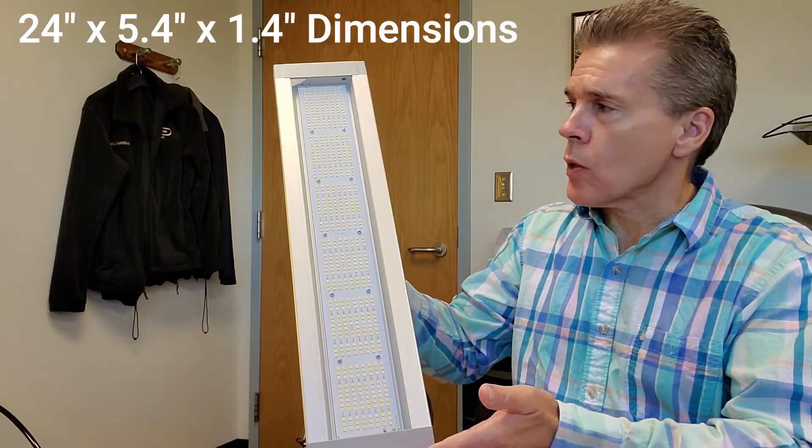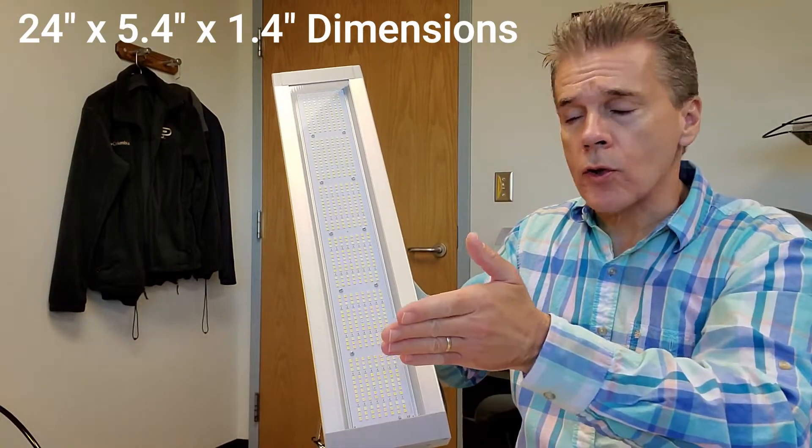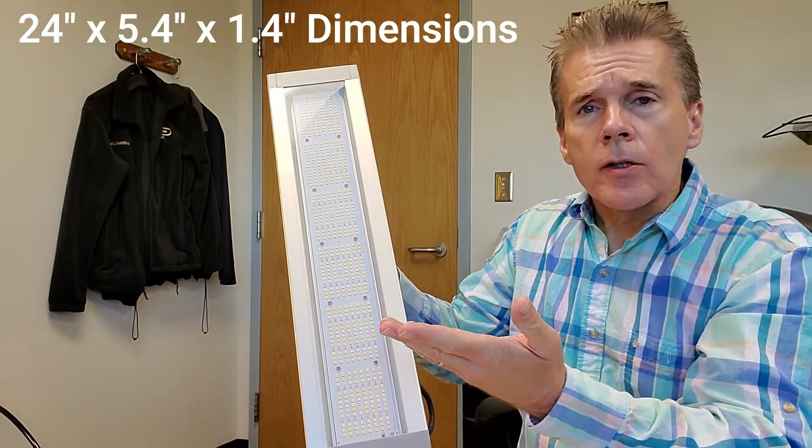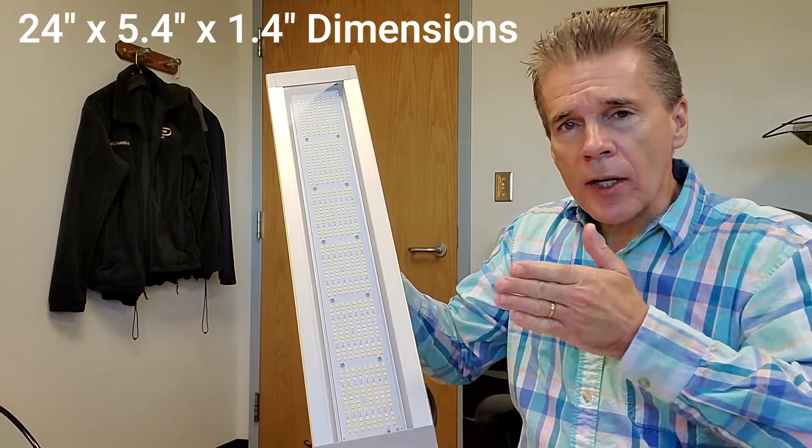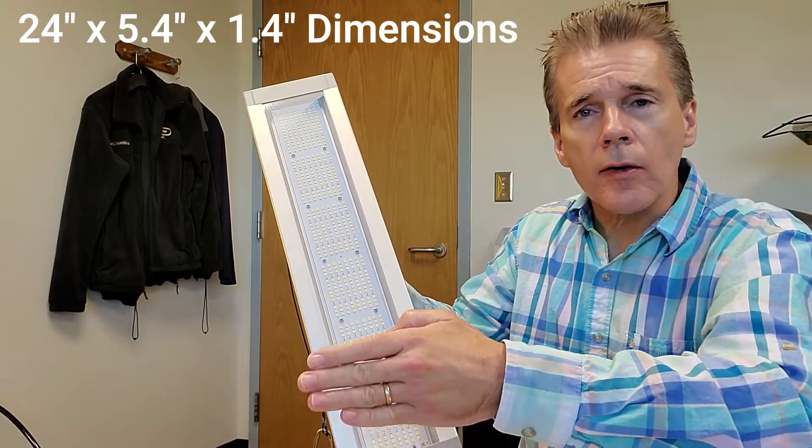First off, it is 24 inches from one side to the other, so in a 2x2 it's going to go from one wall to the other. Now it's just under five and a half inches across, 5.4, so you're going to go right down the middle and hopefully get a little bit of light cast off to the left and right of it in your tent.